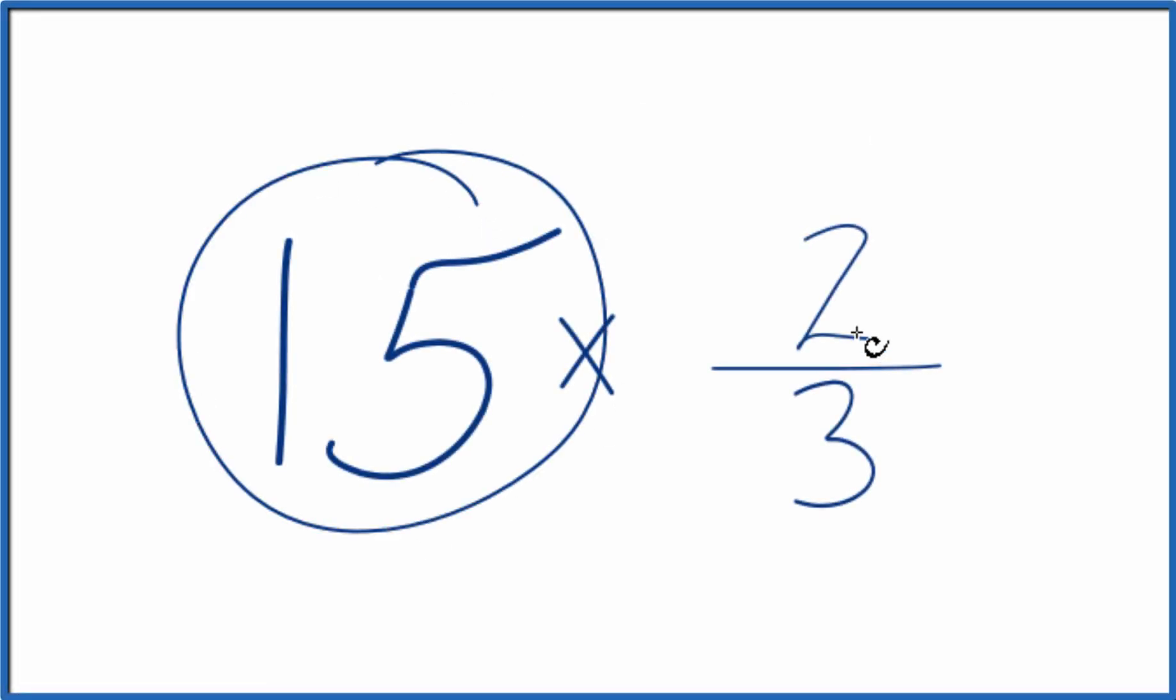If you need to multiply 15 by 2 thirds, here's how you do it. First off, you could just add 2 thirds together 15 times. That would give you the correct answer for 15 times 2 thirds.